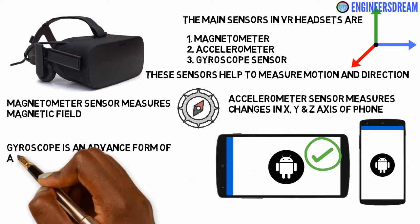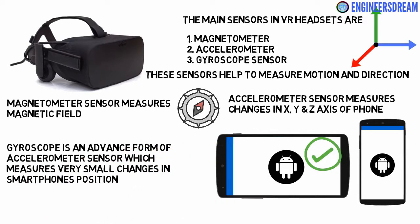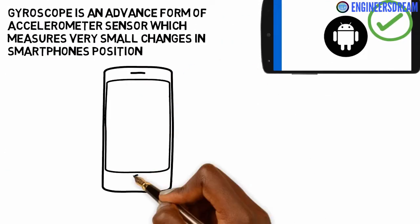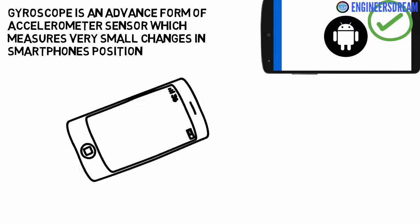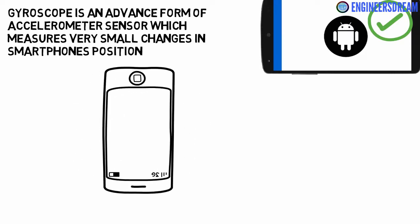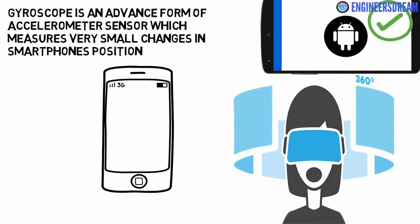A gyroscope sensor is an advanced form of accelerometer sensor and it measures very small changes in the position of the phone. When you tilt your phone, there is a change in position, and these small changes are accurately measured by the gyroscope sensor. The gyroscope sensor is one of the most important sensors in VR because it is what enables head tracking.